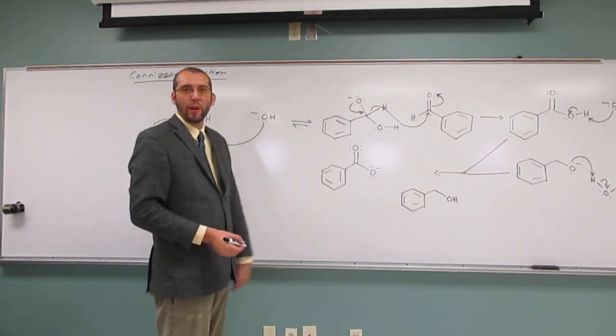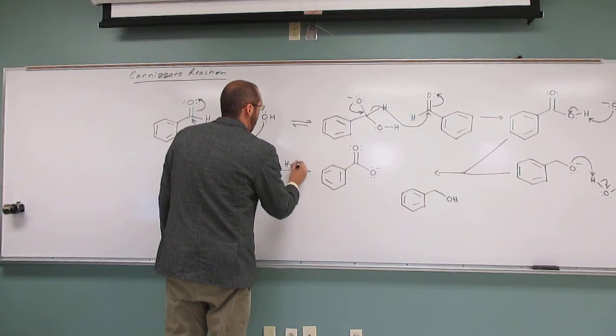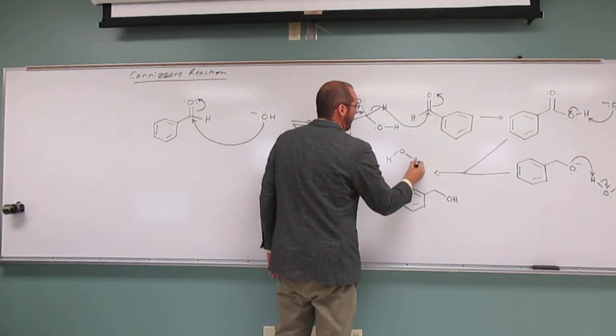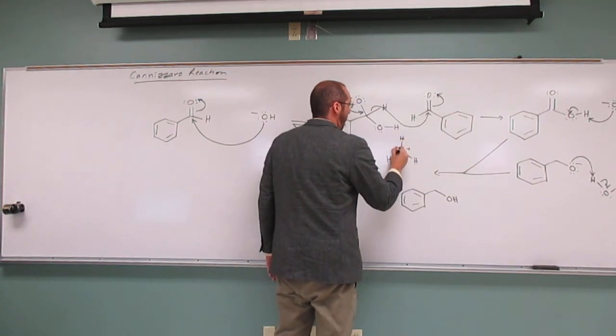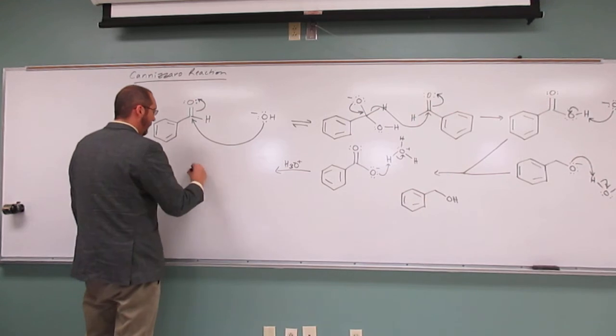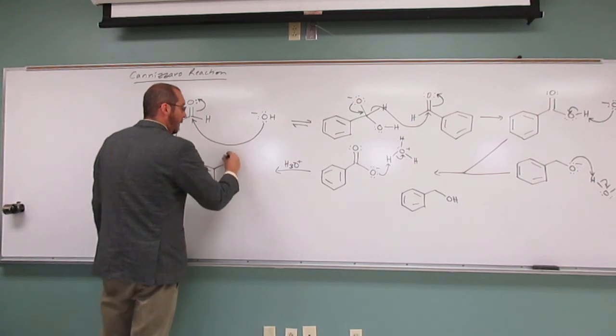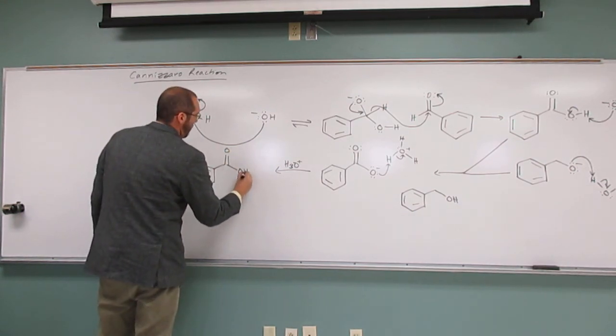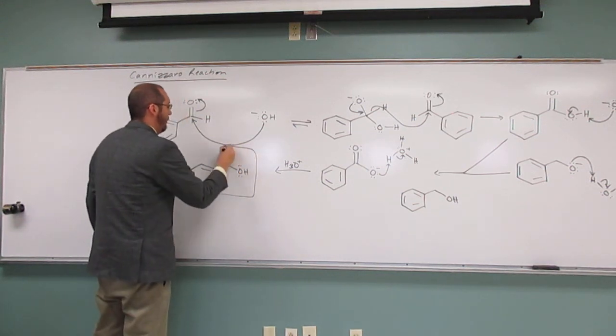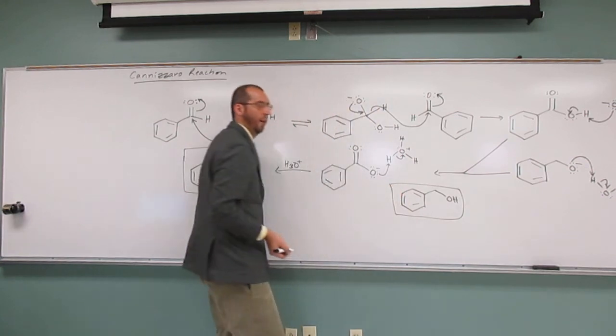And remember, the second step was H3O+. So when we add H3O+ like that, what's it going to do? Yeah, very good. It's going to protonate our carboxylic acid. Like that. So the two products of the reaction, this particular one, are benzoic acid and benzyl alcohol.